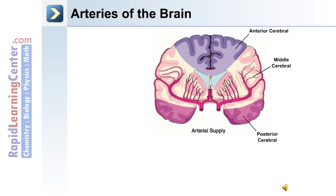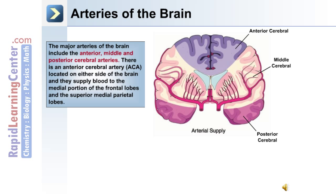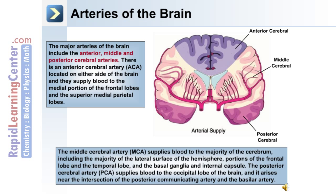The major arteries of the brain include the anterior cerebral, the middle cerebral, and the posterior cerebral, and the regions they supply blood to are depicted in this image. There is an anterior cerebral artery, or ACA, located on either side of the brain, and they supply blood to the medial portion of the frontal lobes and the superior medial parietal lobes.